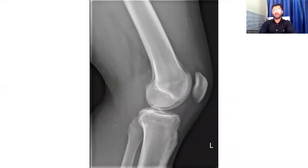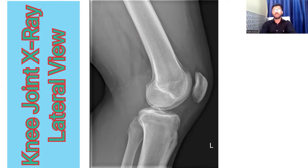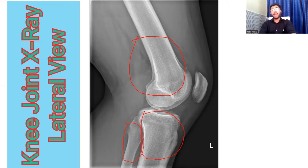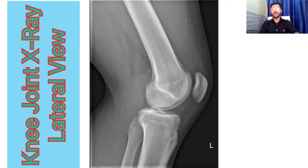Now let's move to the next view — that is the lateral view of the knee joint. When you have a lateral view, you can again see the same bones. Here is the femur, here is the tibia, here is the fibula, and last but not the least, here is the patella. So on this lateral x-ray, you can see all four bones: fibula, femur, patella and tibia.